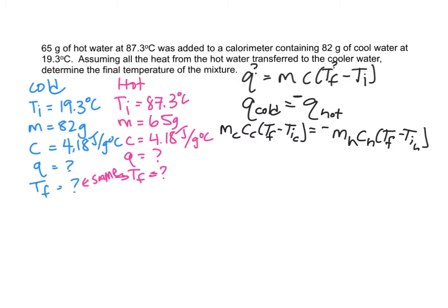And then you can plug in your numbers. Simplify this a little by canceling out the 4.18, which you can only do since you have the same substance here. If you had aluminum and water, you wouldn't be able to do that, and your math would just be a little bit crazier.